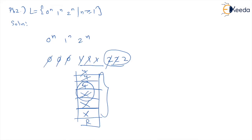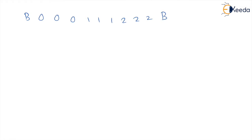Now let us understand how a Turing machine helps here for solving this problem. If I have the input 0, 0, 0, 1, 1, 1, 2, 2, 2, and a blank — the approach is: make the first 0 as x, bypass all the zeros, make the first 1 as y, move to the right, bypass all the ones, make the first 2 as z, and move to the left.